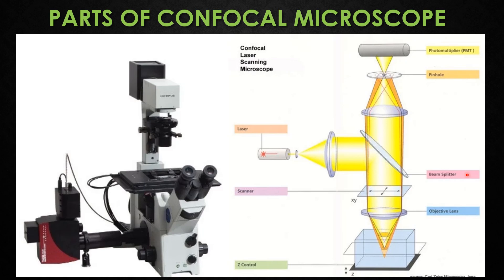The stage is a platform that holds the sample and allows it to be moved in order to scan the sample. The z-control allows the user to focus the laser beam on any focal plane within the specimen. The motorized z-stepper allows movement in the axial direction in small steps of approximately greater than 10 nanometers with high precision.